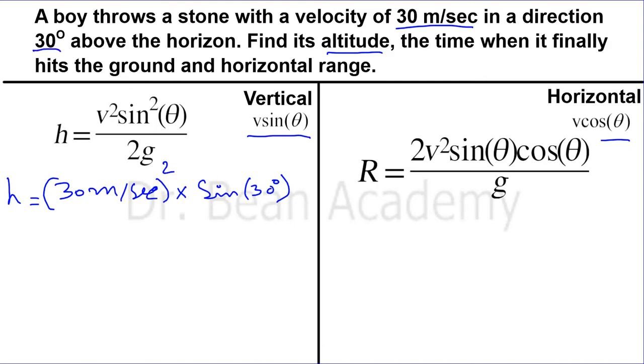...because the angle it is making with the horizon is 30 degrees, divided by 2 multiplied by 9.8 meters per second squared. This is acceleration due to gravity. If I use my calculator, I get a final value of the height as 11.48 meters. I have fixed the accuracy of my calculator to two decimal places. So this is the maximum height achieved by the stone.